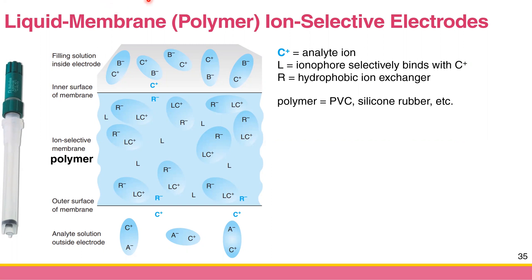If you remember from complexation, L is the ligand and C is the metal ion, and they can bind if they have appropriate charge and size. The ionophore works similarly to the glass membrane structure for pH measurement, or the vacancy site in the solid state ISE. You have a ligand which selectively binds your analyte ion — you can see LC⁺ complexes, which is the binding between the ligand and your analyte ion C⁺.